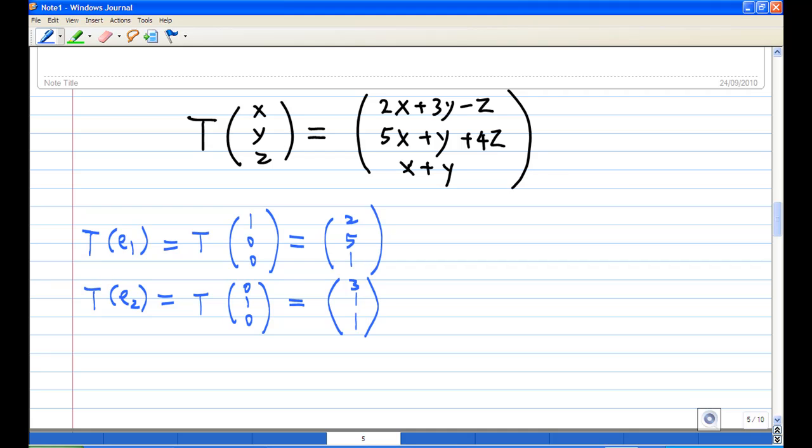And then T(e₃), which is the image of (0,0,1) under T. That means x = 0, y = 0, z = 1. I'll get (-1, 4, 0).